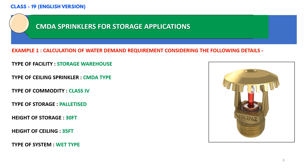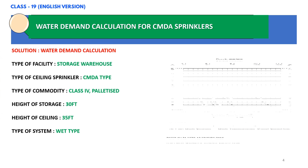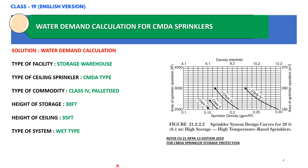Once we have all these details we can calculate the water demand requirement. In the CMDA approach we need to calculate the density and area. Based on this graph, we will initially identify the density. Since we have Class 4 commodity, from this graph it is 0.3 gpm per square feet density and 2000 square feet area of sprinkler operation. Please note that this figure is based on a ceiling height of 20 feet storage height, so we need to adjust the density as per actual height of storage, which is 30 feet. This we shall discuss in the next slide.